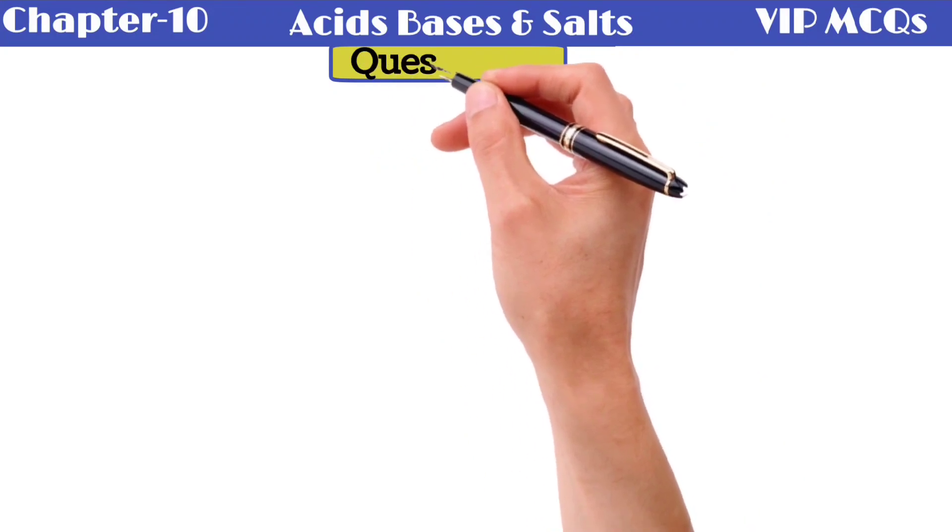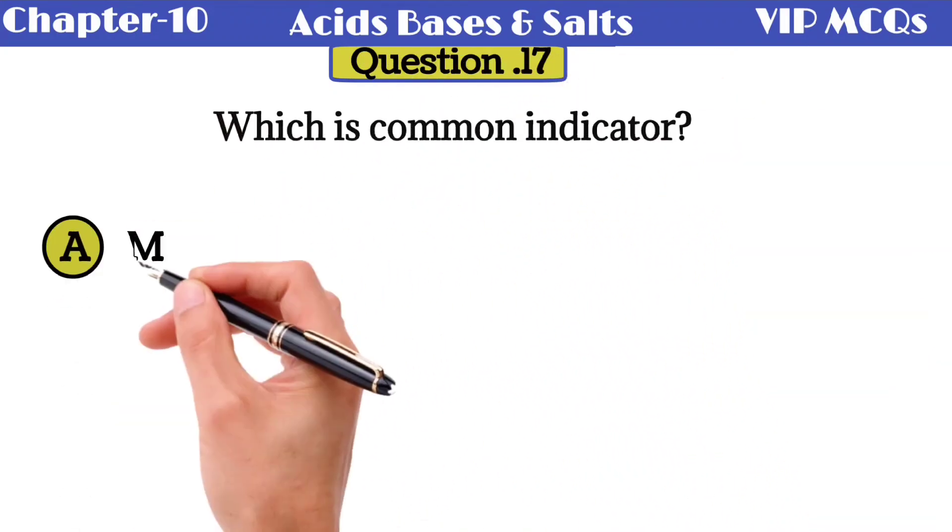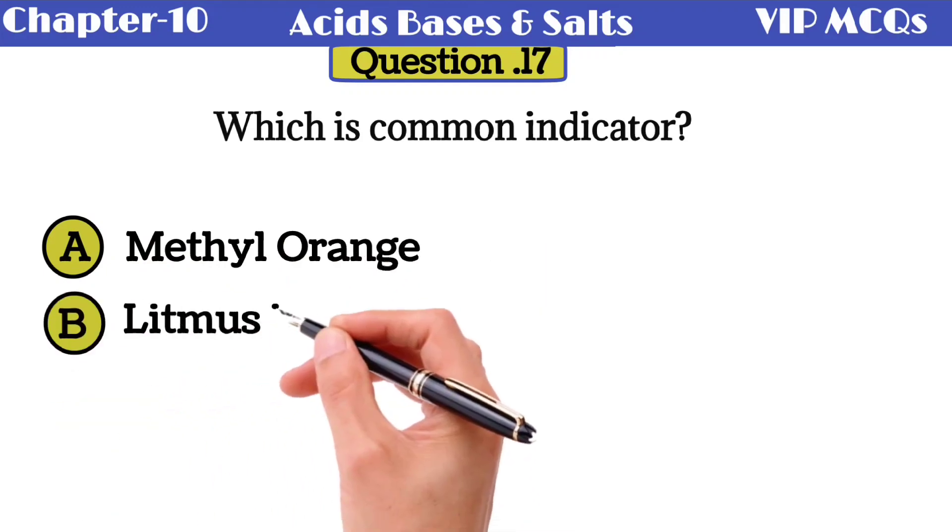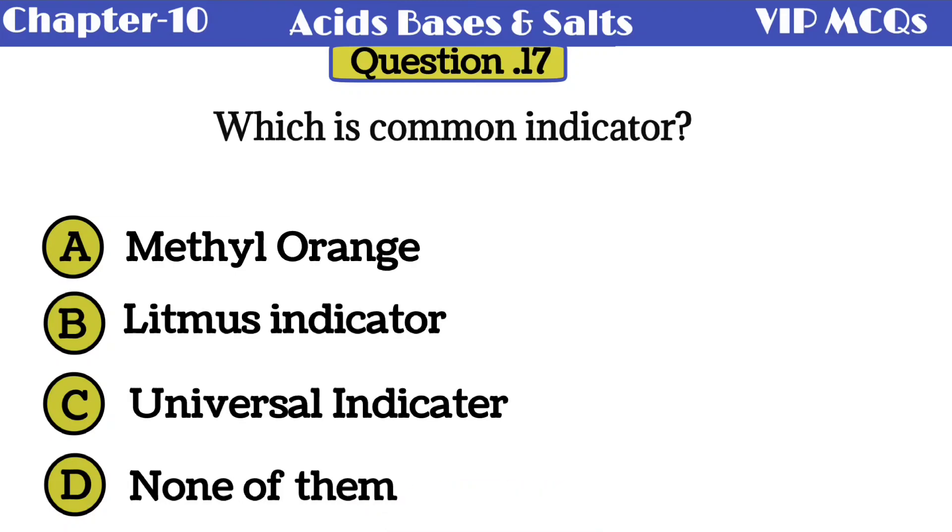Question 17: which is a common indicator? A methyl orange, B litmus indicator, C universal indicator, D none of them. Litmus is known as a common indicator.